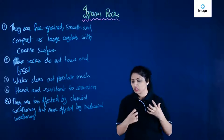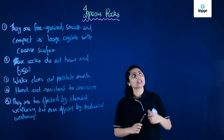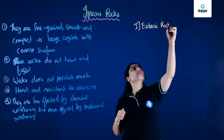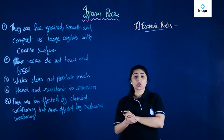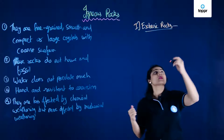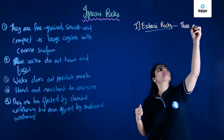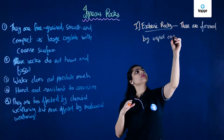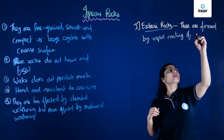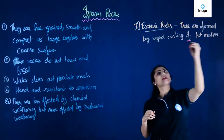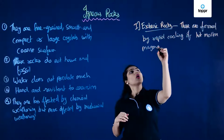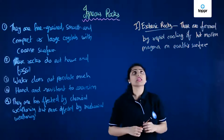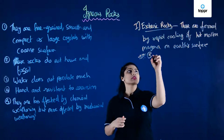Let's talk about the different types of igneous rocks. The first type is extrusive and the second is intrusive. Extrusive igneous rocks are those found on the surface of the earth, formed by the rapid cooling of hot molten magma on the earth's surface. A very common example of extrusive rocks is basalt. Landforms like lava plateaus and lava sheets are formed by this type of rock.